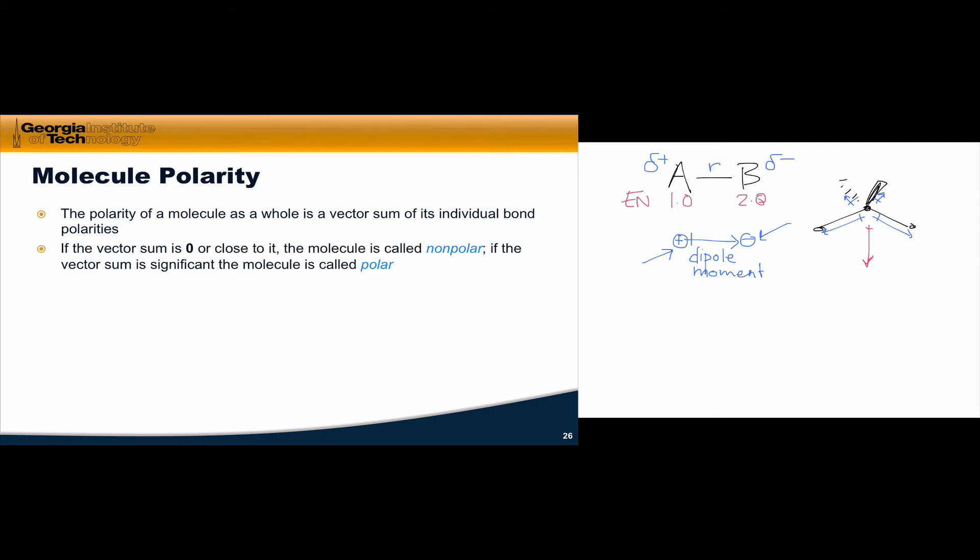If the vector sum is zero or close to it, the molecule is called nonpolar. However, if the vector sum is significant, and this is most important when atoms of very different electronegativity are involved, the molecule is called polar. Now, vectors have direction, which depend on the geometry of the molecule, since these bond dipole vectors, notice they're always parallel to the bond that they correspond to. So the directions of bond dipole vectors then depend on molecular geometry, and that's where VSEPR theory comes in.